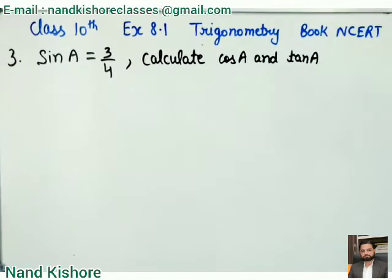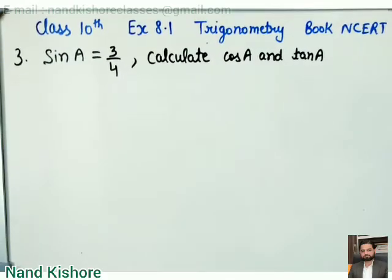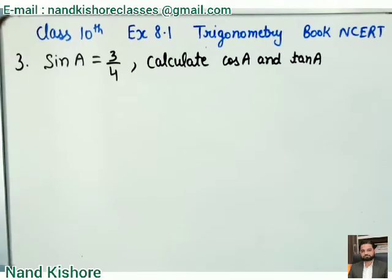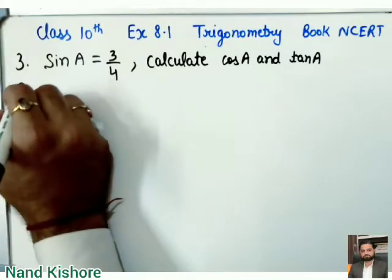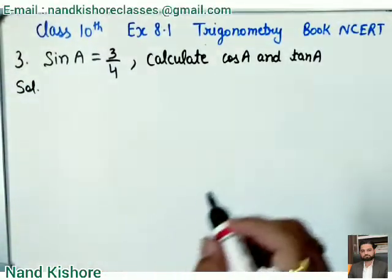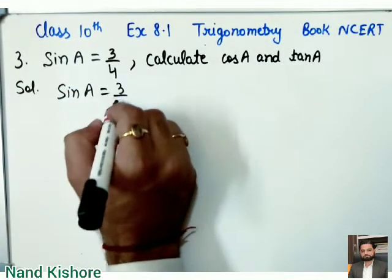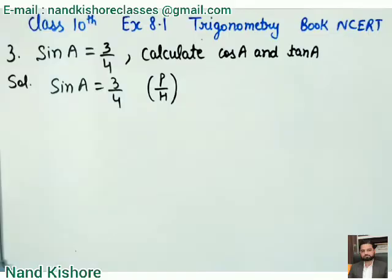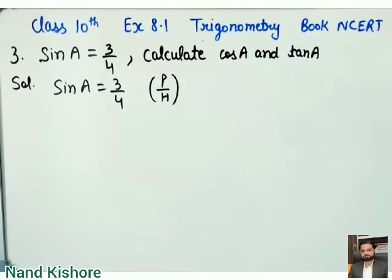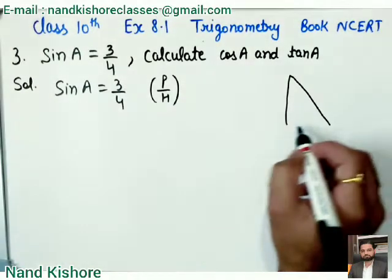Now let's come to question number three. The statement is a bit different from our previous question but very easy. Sin A is equal to 3/4, and we need to calculate the value of cos A and tan A. Let's see how we are going to do this. Sin A = 3/4. Since sine equals perpendicular upon hypotenuse, I need to draw a diagram — triangle ABC, a right angle triangle.